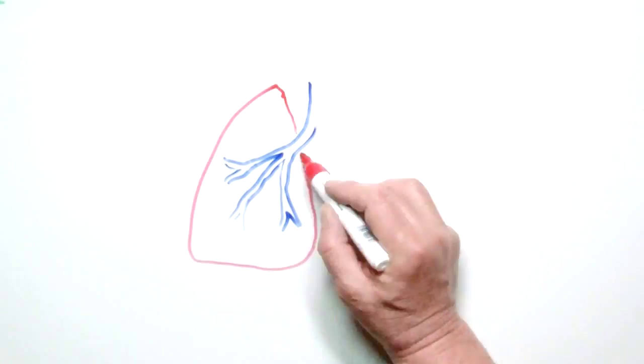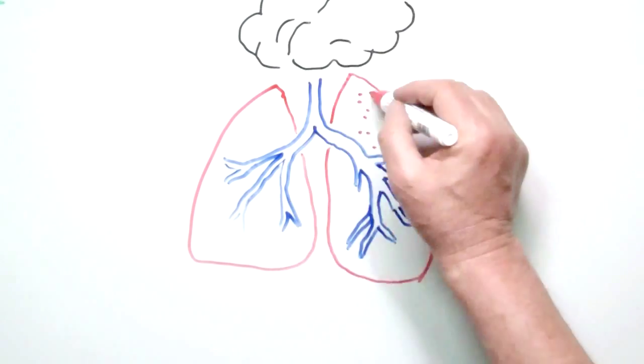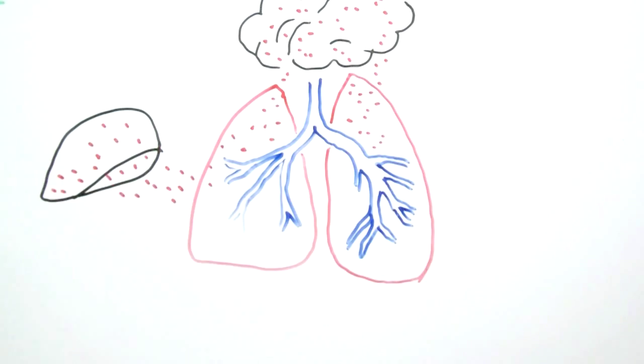The tiniest particles are the ones which then continue on from the lungs to other organs, such as the brain, liver, kidneys, or the heart.